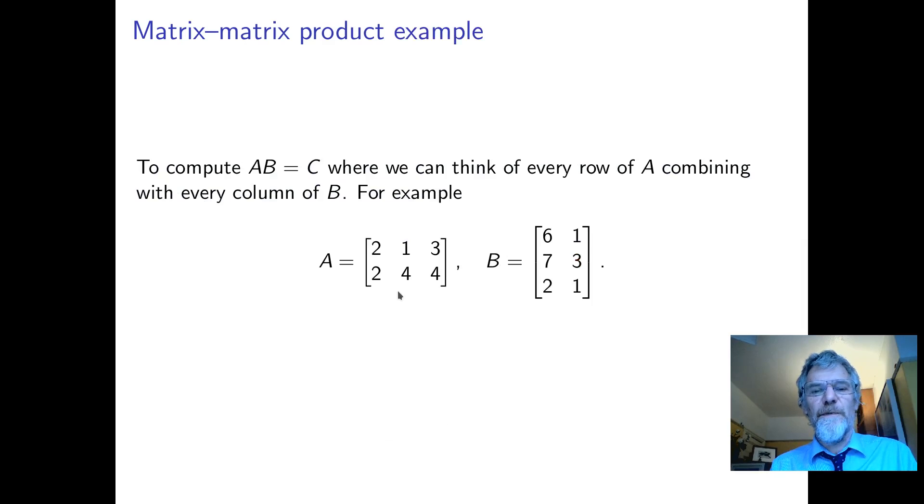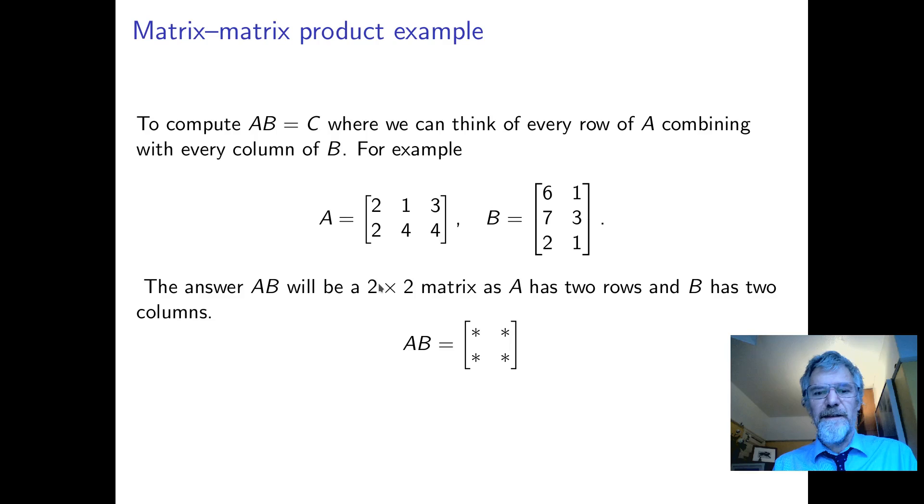So here's an example. We've got a matrix A and a matrix B. Notice that there are three columns here and three rows here, so they are compatible. The answer will be two by two because we take every row of A and every column of B to get an answer in the product.